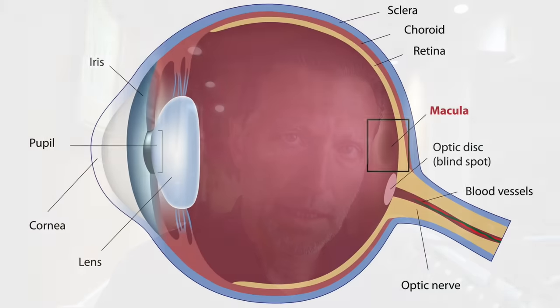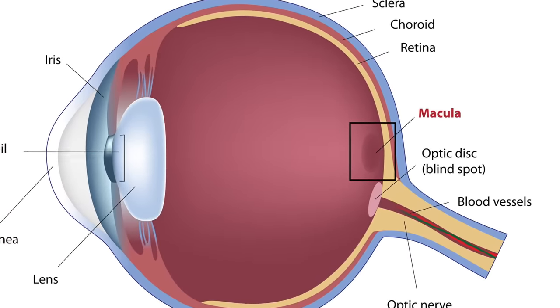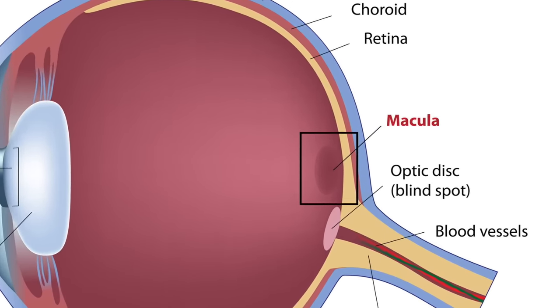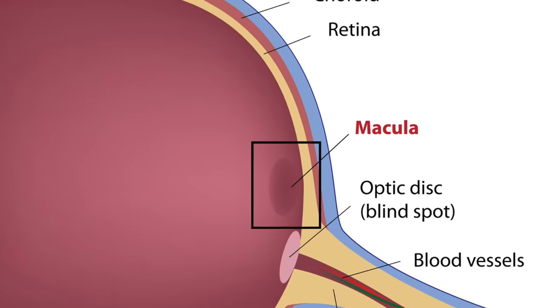Then we have a smaller section of that called the macula. Maybe you've heard of the macula as in macular degeneration as you get older, but the macula is a small section of retinal tissue.